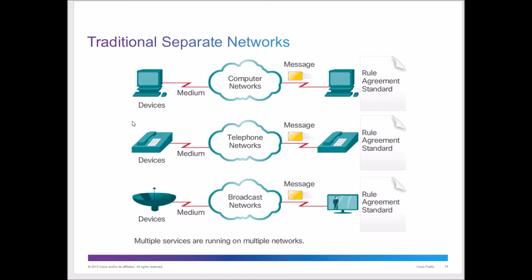We're going to look at what we call converged networks. When we start converging networks, we're looking at the use of the network to allow us to do different types of mediums. Traditionally, separate networks worked differently — we would have a device connect through the network using a standard like Ethernet, and we could send messages back and forth: a file, a web page, a print job.